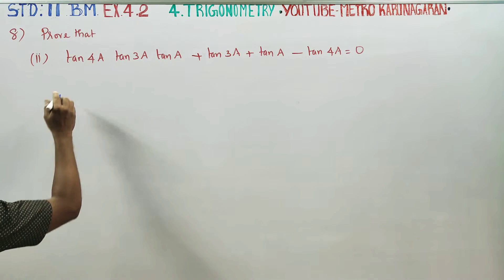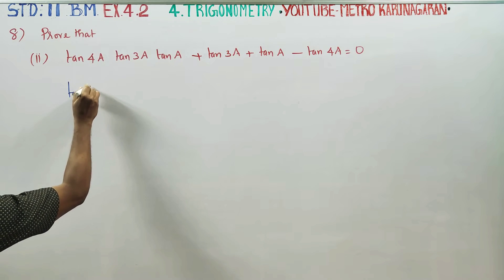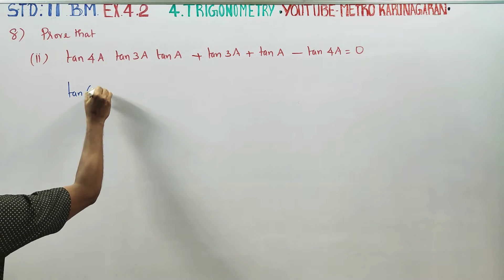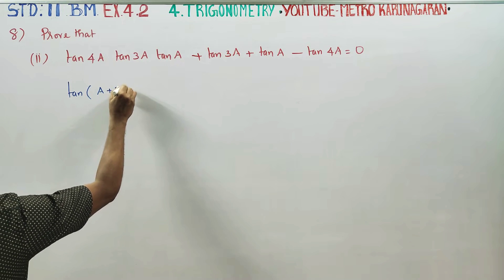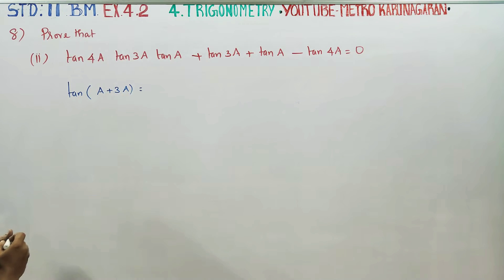First I am going to start this problem with tan A plus 3A. We will use the tan A plus B formula. It is A, it is 3A, 4A is maximum.